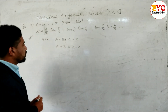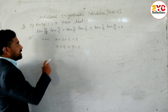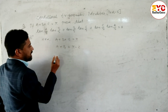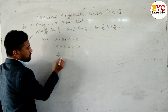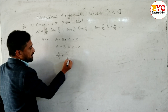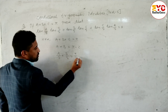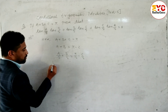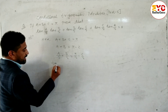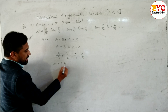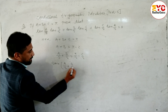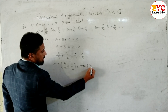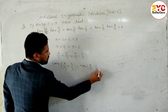We have a/2, b/2, c/2 in the expression, so divide both sides by 2. So a/2 plus b/2 is equal to pi/2 minus c/2. After this, we take tan both sides: tan(a/2 + b/2) is equal to tan(pi/2 minus c/2).